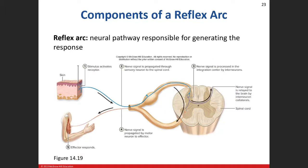The nervous signal enters the spinal cord and gets processed by interneurons, which determine whether you'll have a response. If it's an inhibitory interneuron, it'll shut everything down and you won't have a motor response. If it's excitatory - and interneurons are binary, either excitatory or inhibitory - it will excite the motor neuron, sending an excitatory signal down to the effector organ, which in this case is skeletal muscle. That is the reflex arc.